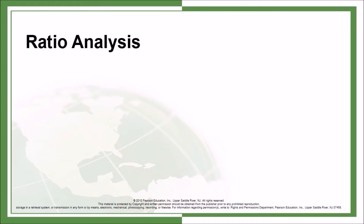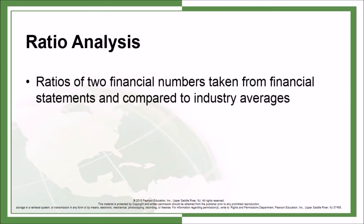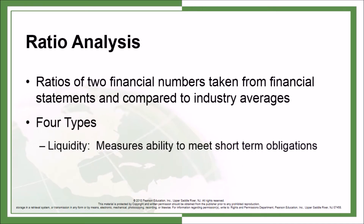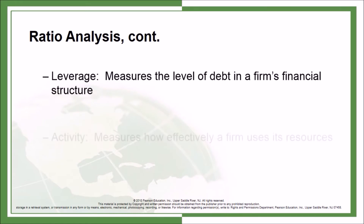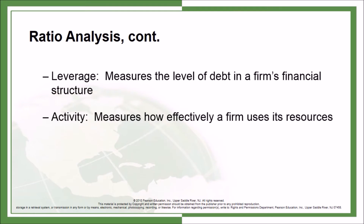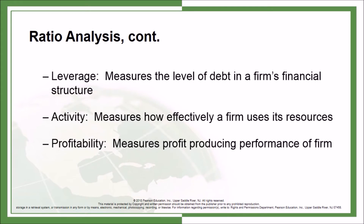Ratio analysis consists of ratios of two financial numbers taken from financial statements and compared to industry averages. There are four types of ratios. Liquidity: measures ability to meet short-term obligations. Leverage: measures the level of debt in a firm's financial structure. Activity: measures how effectively a firm uses its resources. Profitability: measures profit-producing performance of the firm.